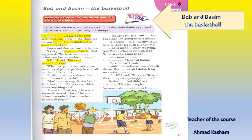Bob told his friends: 'If you want me to go with you to Southport Park, don't mention insects — don't say anything about them.' When we got to the park, there were lots of people playing basketball on the public courts. 'I wish I had my trainers,' Basim said. 'I want to practice.' 'You're sport crazy, Basim,' said Pao, laughing. 'Do you ever think about anything else?' Basim laughed too.